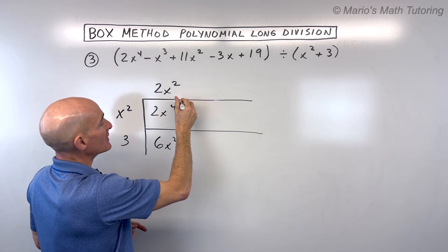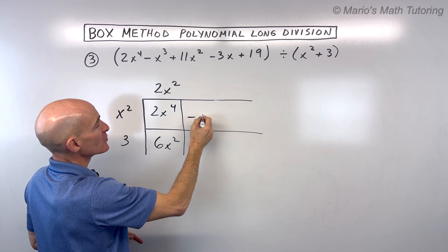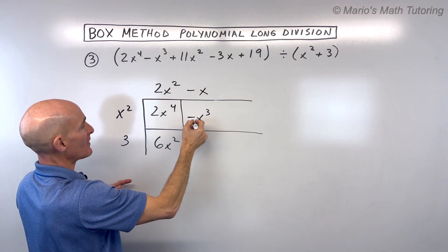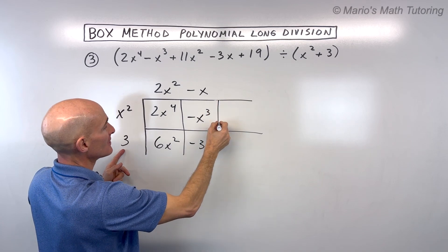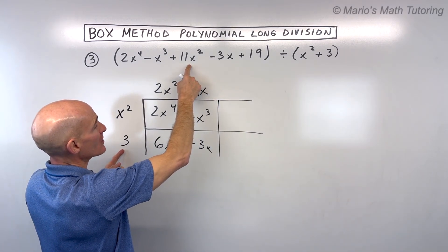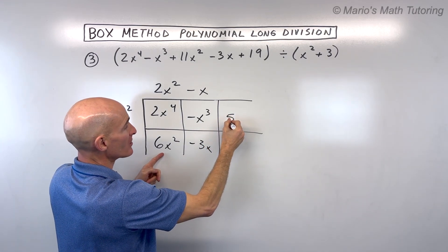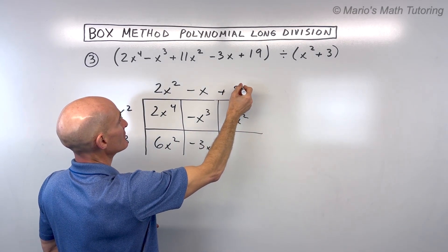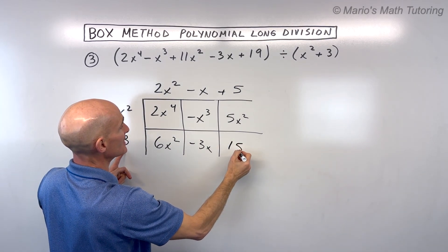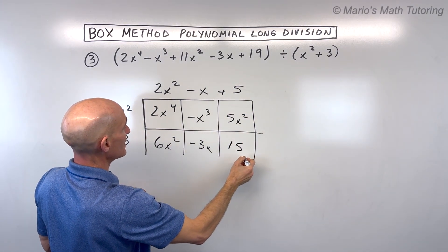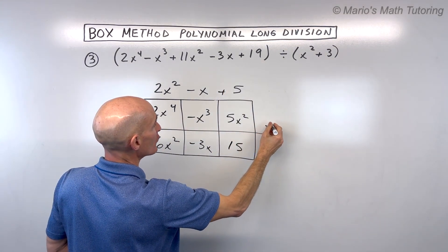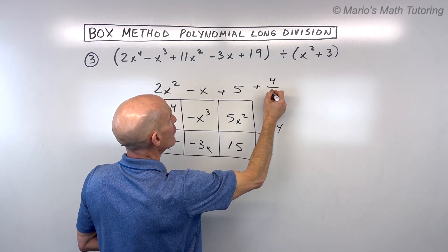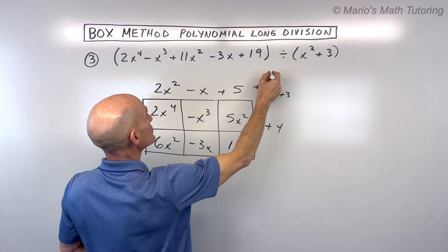Working in descending order, we've got negative x cubed. What times x squared is negative x cubed? That's negative x. Distributing gives us negative x cubed and negative 3x. Now we have 11x squared, and here we have 6x squared, so we need an additional 5x squared. What times x squared is 5x squared? That's 5. Distributing: 5x squared, and 5 times 3 gives us 15. But we need to get 19, so we need an additional 4. When we write our final answer, it's going to be this plus 4 over our divisor, x squared plus 3. That's our quotient — that's our answer.